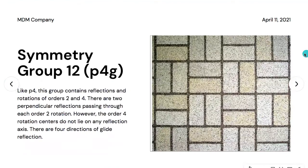Symmetry group twelve is named P4G. Like P4, this group contains reflections and rotations of orders two and four. There are two perpendicular reflections passing through each order-two rotation. However, the order-four rotations do not lie on any reflection axis. There are four directions of glide reflections in this group.